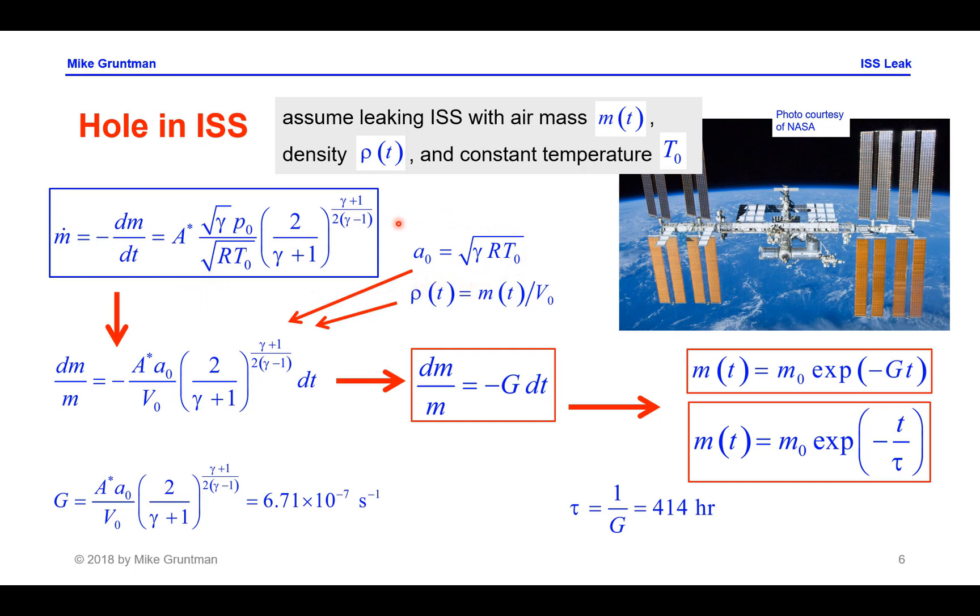Noting the expression for the speed of sound corresponding to the temperature T naught inside the station, and noting that density of air in the station is simply mass, total mass of air divided by the volume, we can rearrange this equation and get the direct expression or differential equation for the changing mass inside the station as a function of time. And this expression could be simplified as shown here: dm divided by m equals minus G, coefficient G times dt, where G is shown at the bottom. It is approximately 6.7 times 10 to the minus 7 per second.